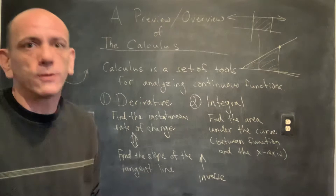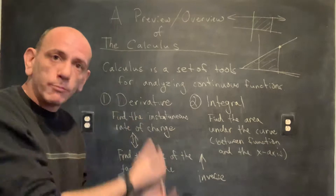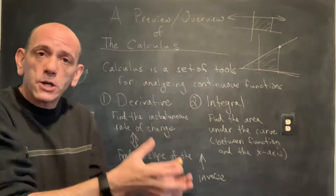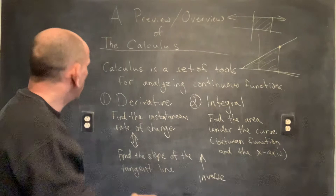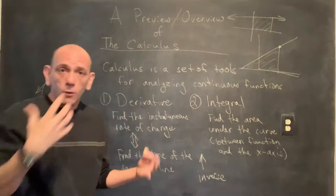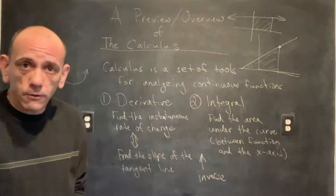Whenever we learn addition, the first thing we learn next is subtraction. Multiplication, then division. Powers, then roots. Exponents, then logs. We learn an operation and then immediately learn how to undo it. So that's what we're looking at here — we'll start with the derivative, and then immediately ask how do we undo that, and the answer is the integral.